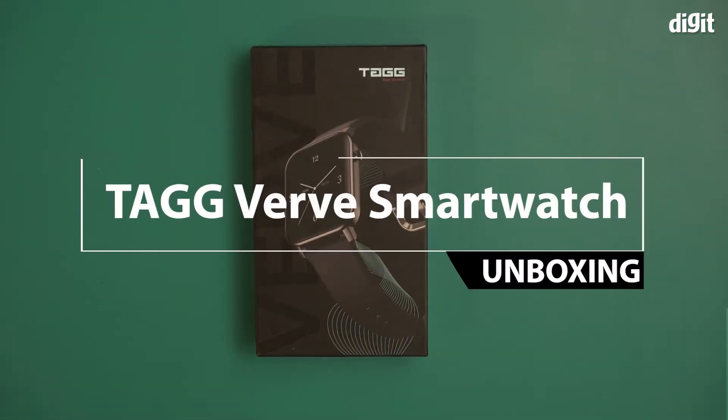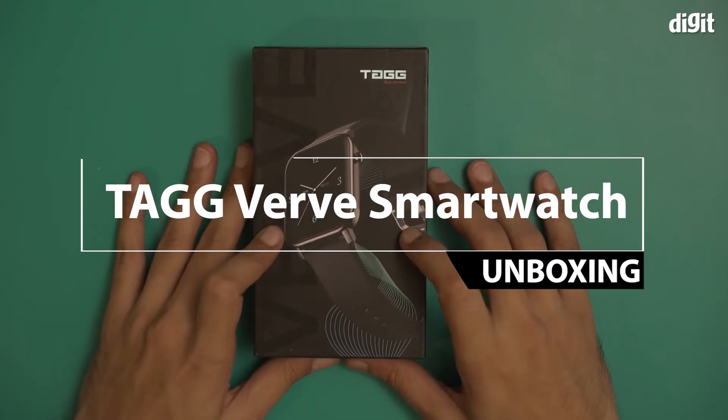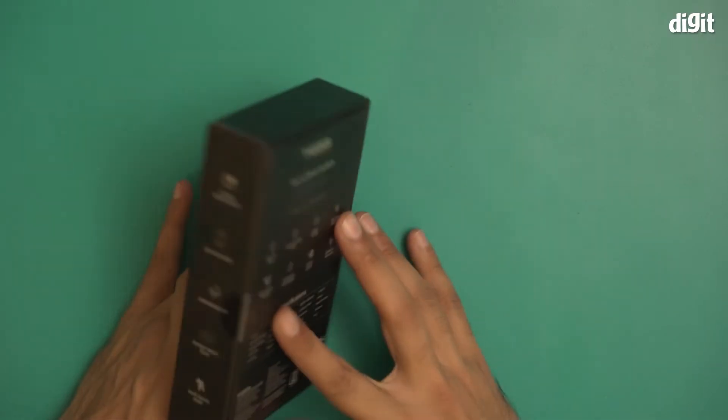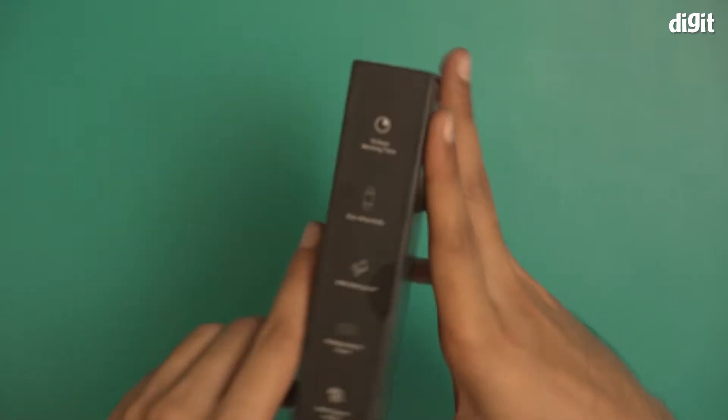Hello and welcome to the unboxing of the TAGG Verve Smartwatch. You have a photo of what this smartwatch is going to look like, and this particular variant is black. We do have some extra information on this box.